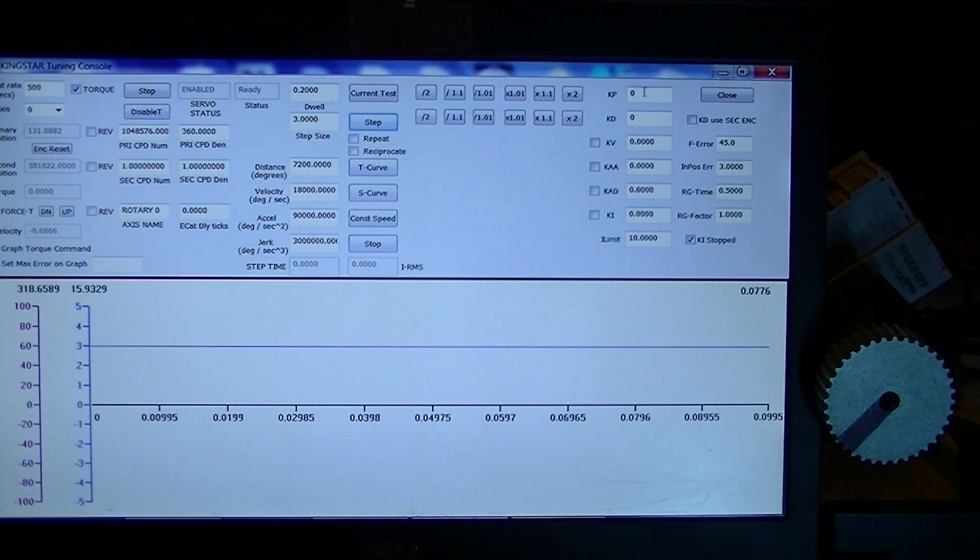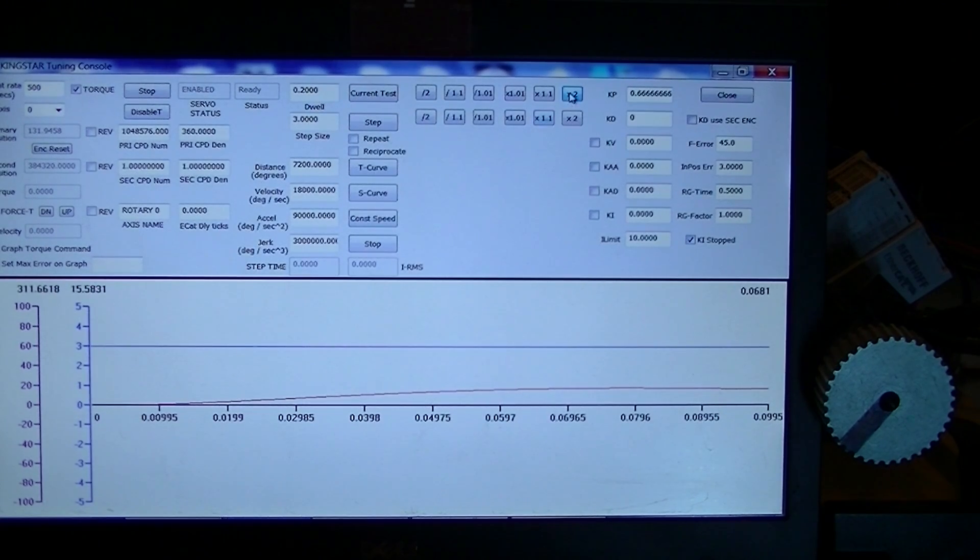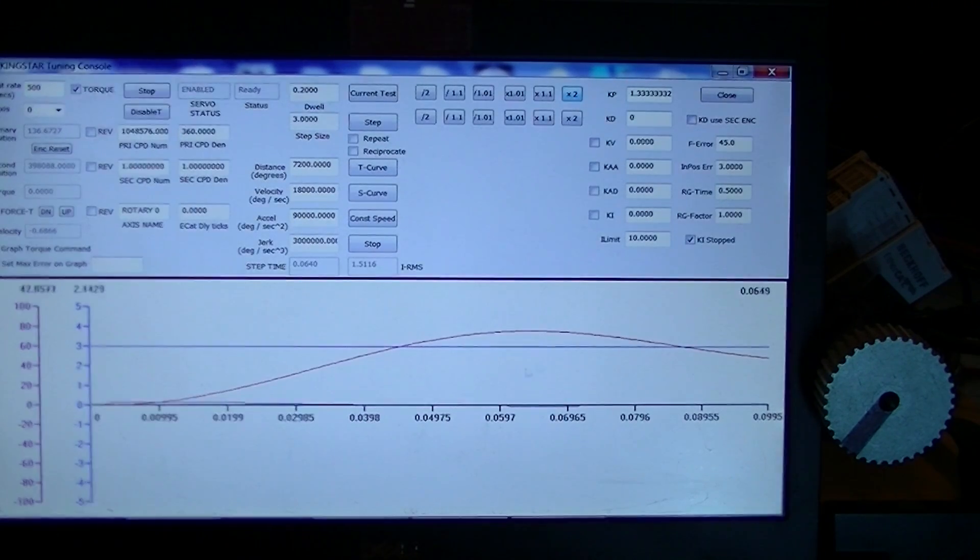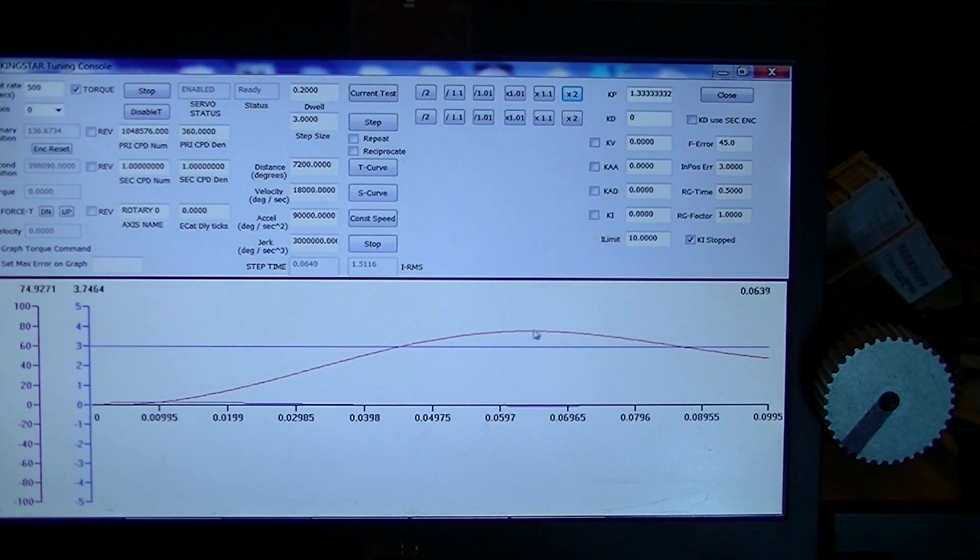We have no idea what values are really going to be needed, so I'm going to say, associated with KP, just double it. The fact that it was already zero means our software is going to give it a value of 1%. As you can see, it's barely moving. We double it again, it's moving a little bit more. I can double it one more time, and you can see it does make the three degrees, but it's very slow.